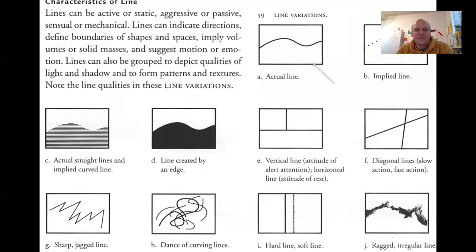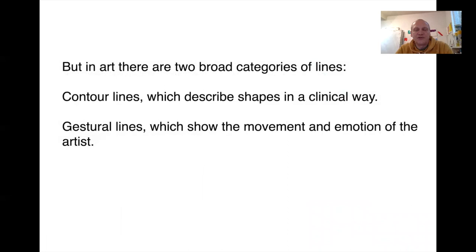Like arrows. Now these are called contour lines — you can see how clean and clinical they are. Whereas something like this on the bottom right would be a gestural line, and we'll look at that momentarily. Contour lines describe shapes in a clinical way; gestural lines show the movement and emotion of the artist.